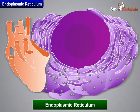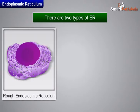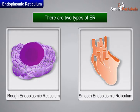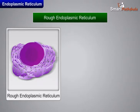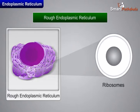There are two types of ER: one, rough endoplasmic reticulum (RER), and two, smooth endoplasmic reticulum (SER). The outer face of the rough endoplasmic reticulum is studded with ribosomes, which are the sites of protein synthesis.